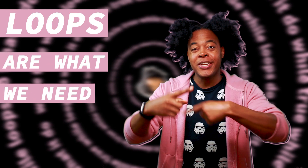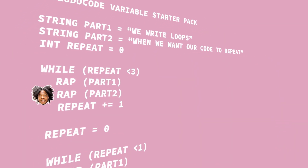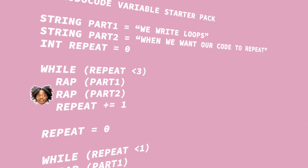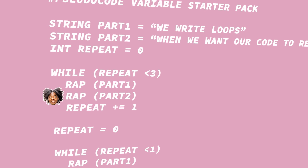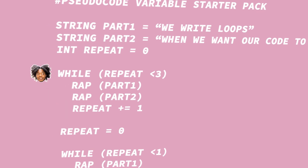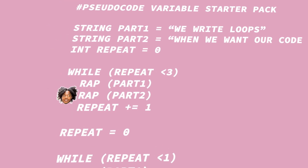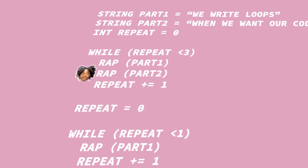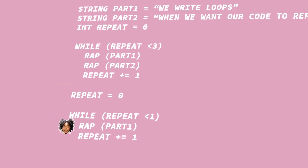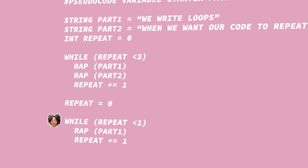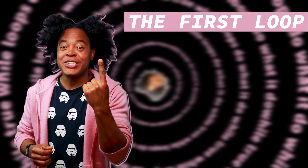Loops are what we need. Loops — when we want our code to repeat and rewrite. Loops: when we want our code to repeat and rewrite.